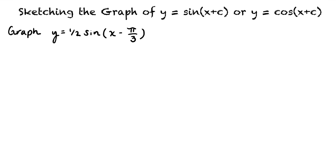First, we'll start with the graph of y equals sine of x. Next, we'll graph y equals one-half sine of x. And finally, we'll get to the graph that the problem is asking for, y equals one-half sine of x minus pi over 3.